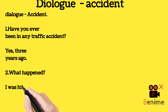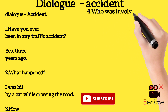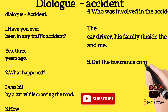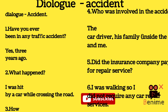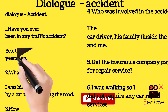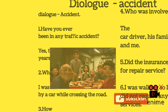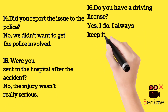Have you ever been in a traffic accident? Yes — three years ago. What happened? I was hit by a car while crossing the road. How did you feel then? I felt really terrible because of my injuries. Who was involved in the accident? The car driver, his family inside the car, and me. Did the insurance company pay for repair services? I was walking, so I did not require any car repair services. Did you need a lawyer? I hurt my lower back just a little, so I didn't call a lawyer.